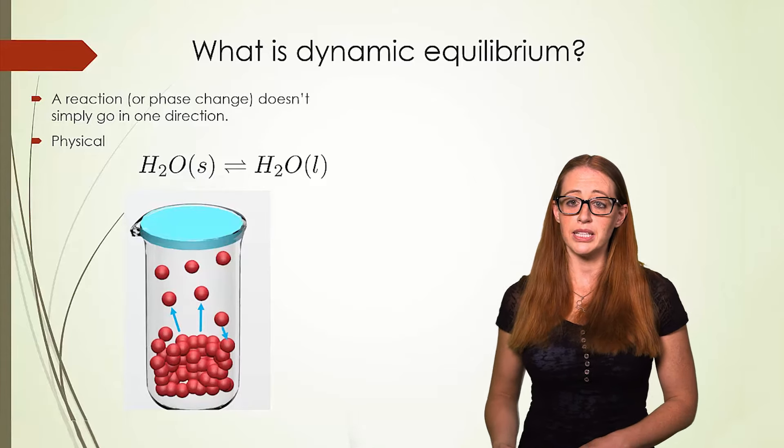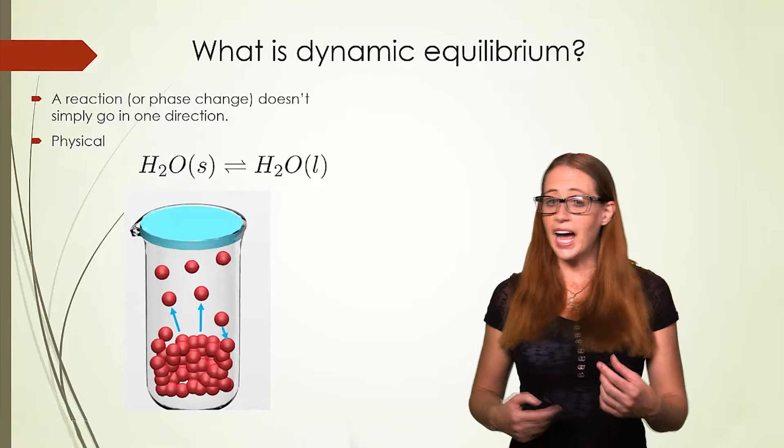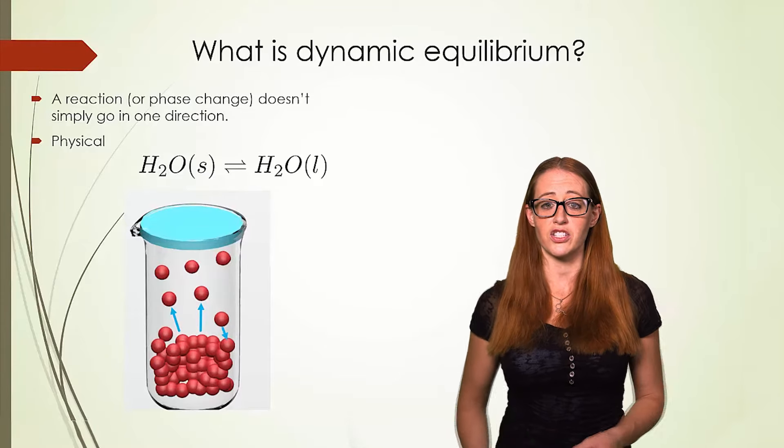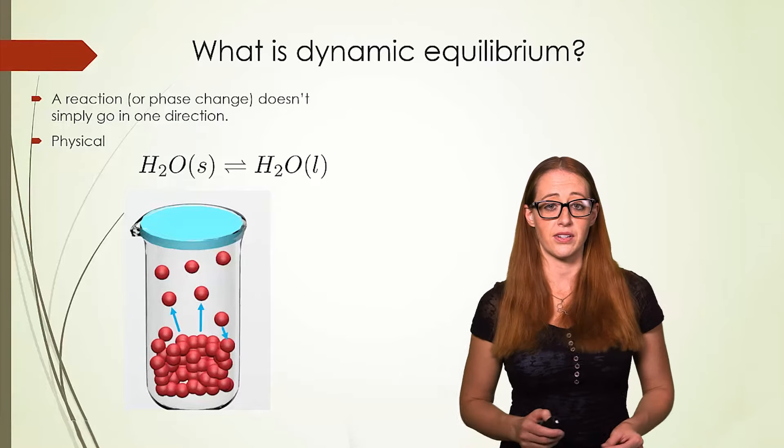In a dynamic equilibrium, the amount of products and reactants are staying the same. However, it's not due to a static state where nothing is changing, but rather the rate of the forward and the reverse process are the same.